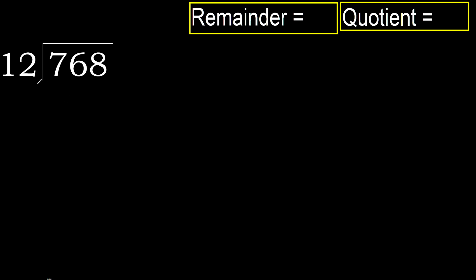768 divided by 12. 7 is less, therefore next. 76 is not less, therefore work with 76. 12 multiplied by which number is nearest to 76, but not greater?